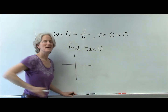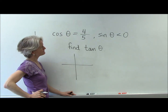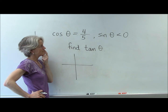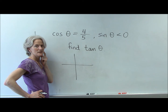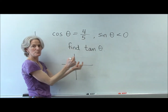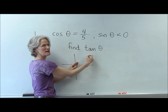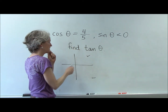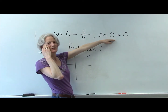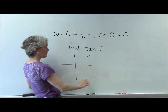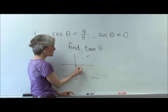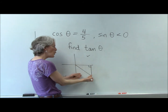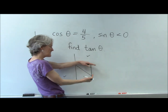A picture is worth a thousand words. Draw a triangle whose adjacent side is 4 and whose hypotenuse is 5. Since sine of theta is less than 0, we can start by noting that cosine is 4/5, which is positive, so x must be positive — meaning we're in quadrant 1 or quadrant 4. Cosine is positive in quadrants 1 and 4. But sine is negative, and sine is associated with the y variable, so it has to be quadrant 4. Reference triangles are always in relationship to the x-axis — that's where you started your rotation.